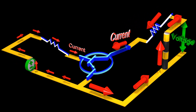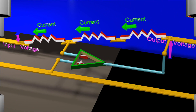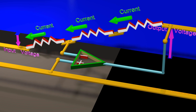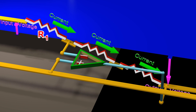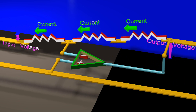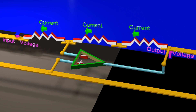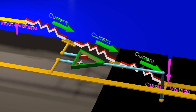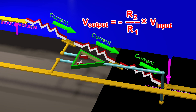Transistors can also be used to create operational amplifiers, also known as op-amps. In an ideal op-amp, no current flows into the input terminals, and negative feedback causes the voltages at the two input terminals to be equal to each other. Op-amps can be used to create many wonderful circuits. This circuit is called an inverting amplifier, because when the input is positive, the output is negative.